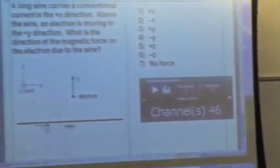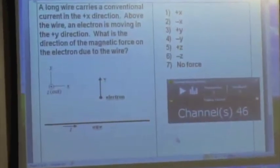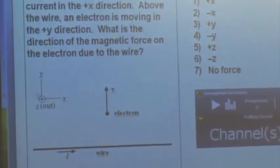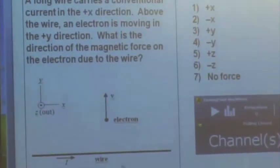A long wire carrying a conventional current in the positive x direction is here. So this is capital I pointing to the right, positive x direction. And above the wire, above meaning in the y direction here, there's an electron. And the electron is moving in the positive y direction. What is the direction of the magnetic force on the electron due to the wire?